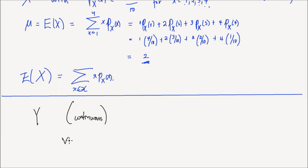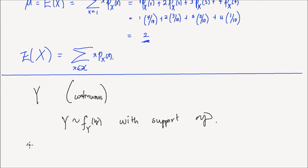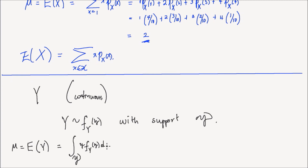Suppose y has a probability density function f_y(y) with support script Y. The expectation of this random variable, denoted E[y] or mu, is now — instead of a summation — the integral over all values in the support of y times the probability density function f_y(y) dy. That's the expectation of the continuous random variable y, and that's how it's defined.